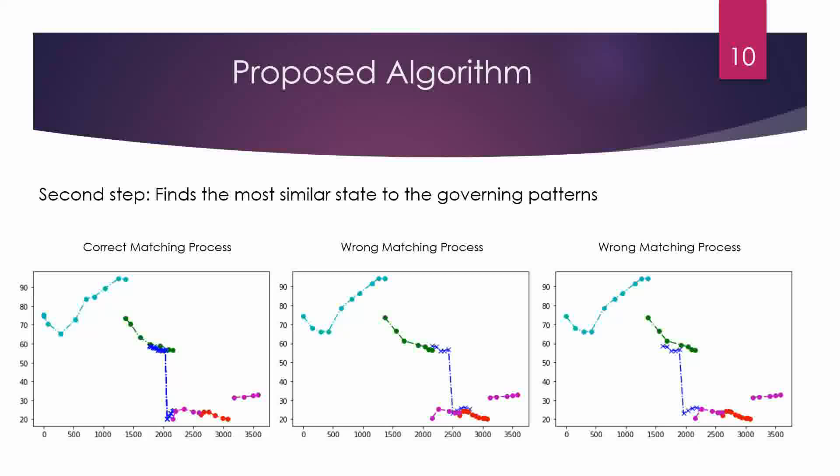The next step is the matching process. In this step, we want to find the most similarity between the input data stream and the governing pattern extracted in the initialization step. In the pictures below, you see one correct matching process and two wrong examples. The blue data points are the input data streams with history length h, and each other color represents one class of data from initialization. The leftmost picture has the most similarity between the blue points and the governing patterns; the other two have less similarity.